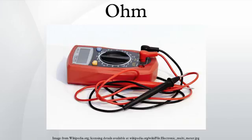The Ohm is the SI-derived unit of electrical resistance, named after German physicist Georg Simon Ohm. Although several empirically-derived standard units for expressing electrical resistance were developed in connection with early telegraphy practice, the British Association for the Advancement of Science proposed a unit derived from existing units of mass, length and time, and of a convenient size for practical work, as early as 1861.